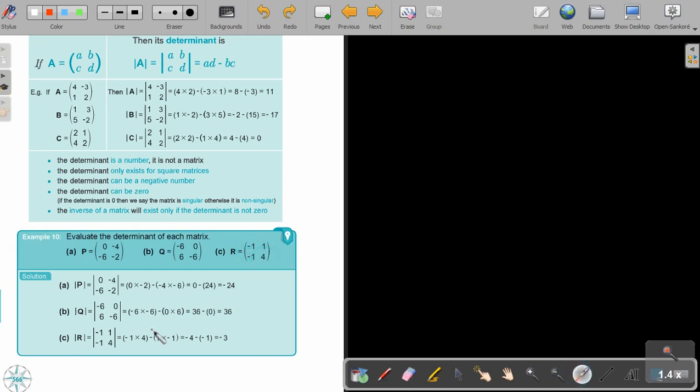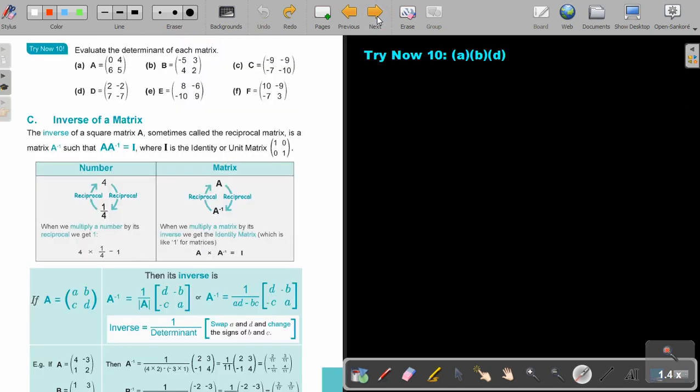The same here. Negative 1 times 4. Subtract. 1 times negative 1. And that's negative 4 minus... And now you can just do normal negative numbers. A negative times a negative will become a positive. So negative 4 plus 1 will be equal to negative 3.